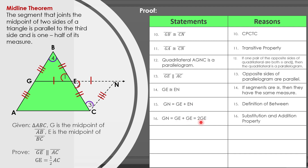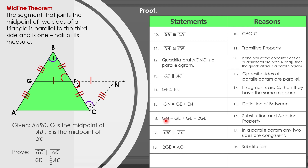Statement 17: segment GN is congruent to segment AC, with the reason being that in a parallelogram, opposite sides are congruent. Statement 18: 2GE is equal to AC by substitution, since from statement 16 GN equals 2GE. For our last statement 19, GE is equal to one half of AC by the multiplication property — multiplying both sides by one half to isolate GE. Therefore, we end up with GE equals one half AC. That is how we prove the midline theorem deductively.